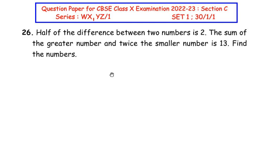This question is from the pair of linear equations in two variables chapter. Half of the difference between two numbers is 2. The sum of the greater number and twice the smaller number is 13. Find the numbers.